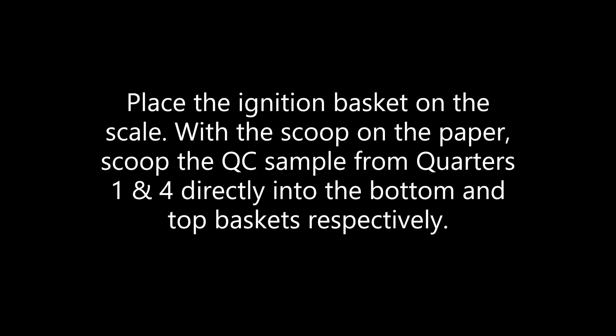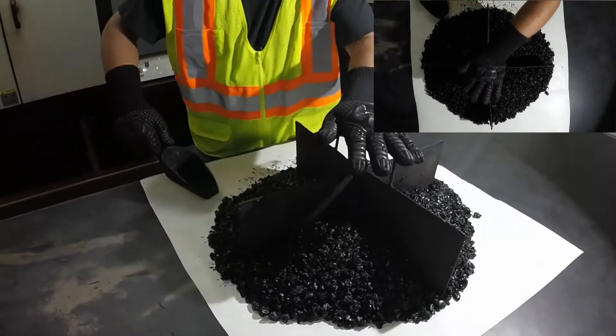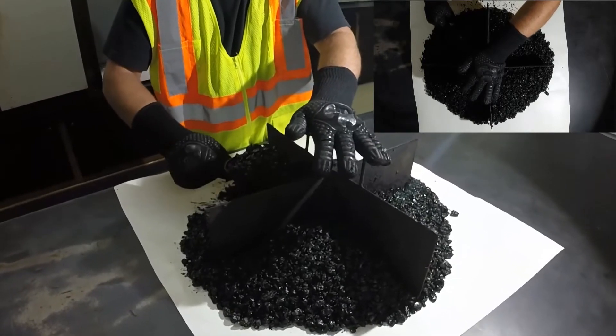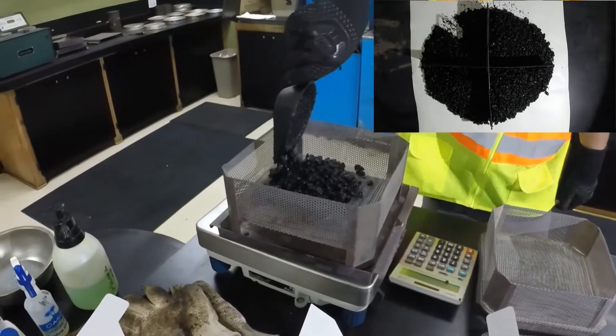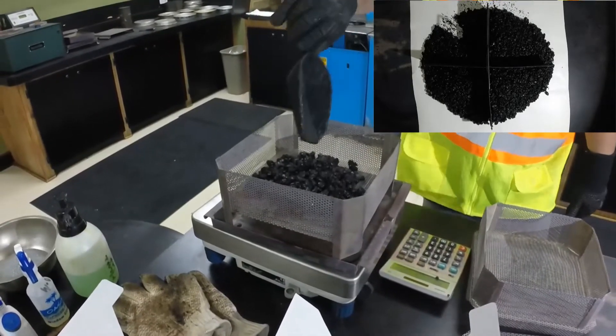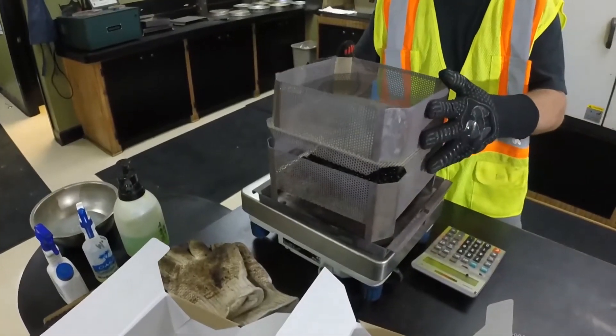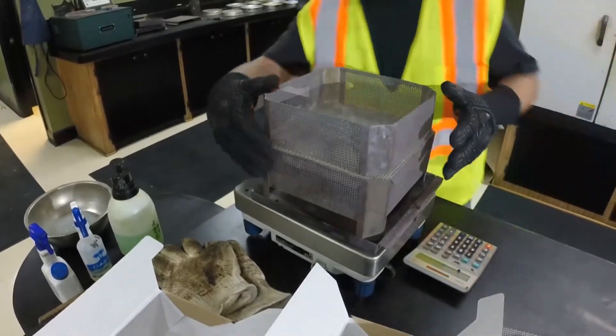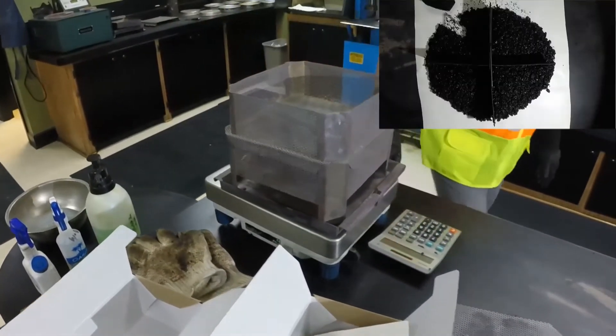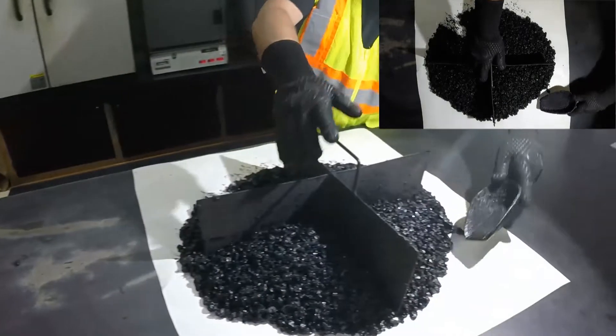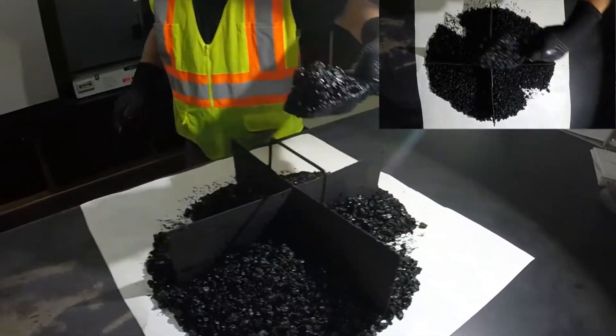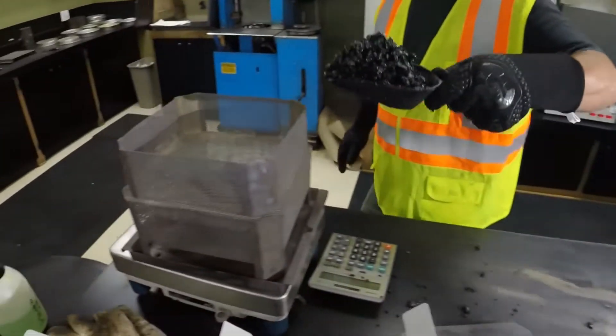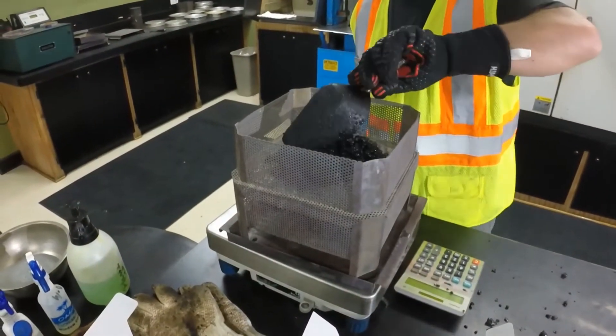Place the tray and bottom basket on the scale and scoop a QC sample from opposite corners, one and four. With the scoop flat on the paper, push the scoop straight into the pile. Place approximately half of the required mass from one quarter into the bottom basket, and place approximately half of the required mass from the opposite quarter into the top basket. A flat bottom scoop works best for this purpose.